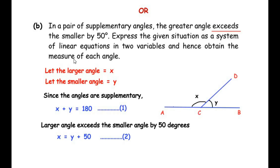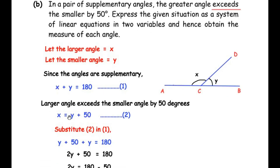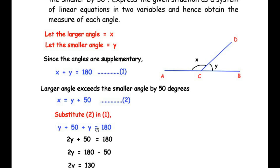Now we need to find the measure of each angle, so we find x and y. Using the substitution method, substitute the value of x from equation 2 into equation 1. In place of x, we write y plus 50, giving: y plus 50 plus y equals 180.